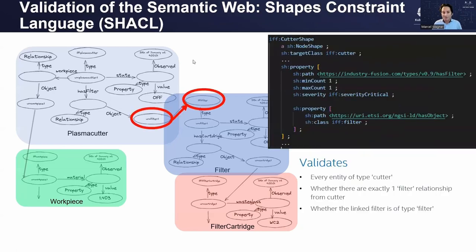Once you have a model, information, and knowledge, you need to define what to do with it. To define your constraints and how you operate on the graph, there is another language called Shapes Constraint Language, SHACL. With SHACL, you can say: this is my graph — I have a workpiece, a plasma cutter, a filter, a filter cartridge. The plasma cutter must be connected exactly once with a filter, and the filter must be of a specific class — in this case, an IFF filter. If this requirement is not met, it is a severe problem. You can look for much more complicated relationships in your graph.